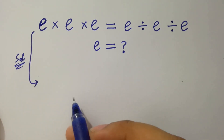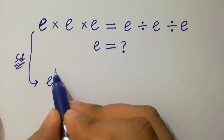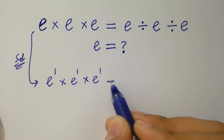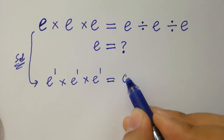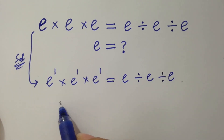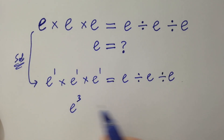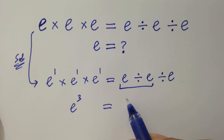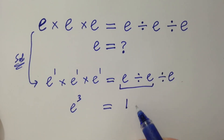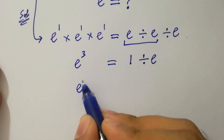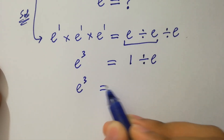On the left hand side, this is the same as e to the power 1 times e to the power 1 times e to the power 1. On the right hand side, using the base and power rule, it will be e to the power 3 equal to e divided by e, which equals 1, so it will be 1 divided by e. Thus e cubed equals 1 over e.